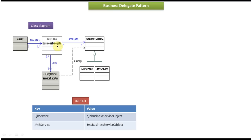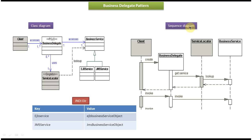Next we will see the Sequence Diagram of Business Delegate Design Pattern. This is the sequence diagram. You can see Client, Business Delegate, Service Locator, and Business Service Component here. What the client will do is it will create the Business Delegate, and Business Delegate will invoke the Service Locator to get the Business Service Object. Once Business Delegate gets the Business Service Object, it can invoke the methods of the Business Service Object. This is the Sequence Diagram of Business Delegate Design Pattern, along with the Class Diagram.